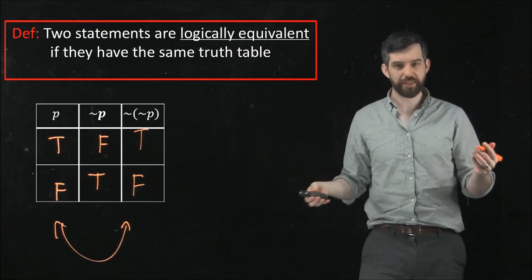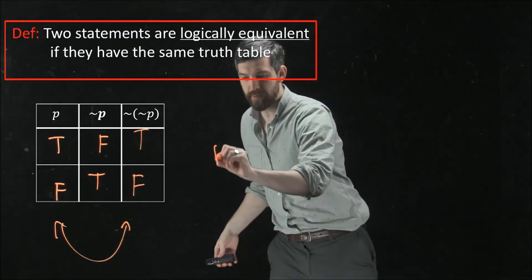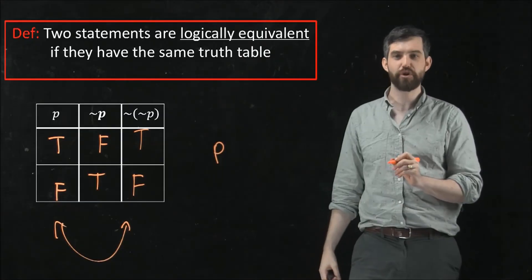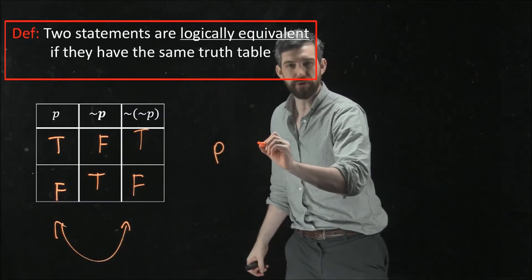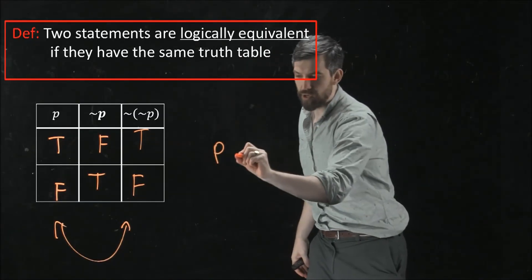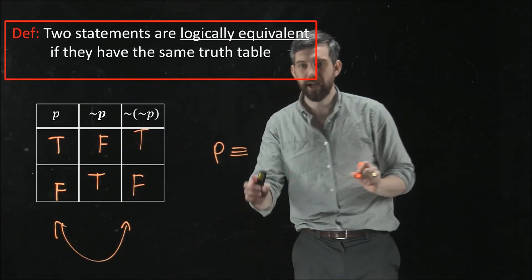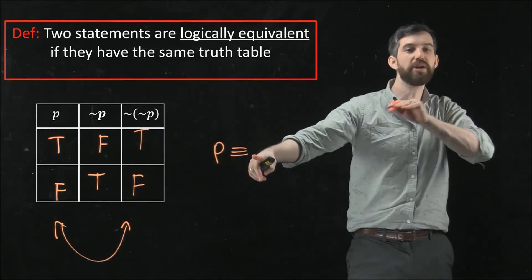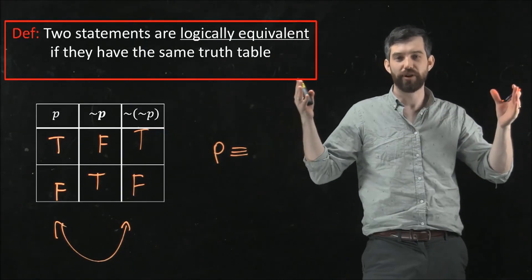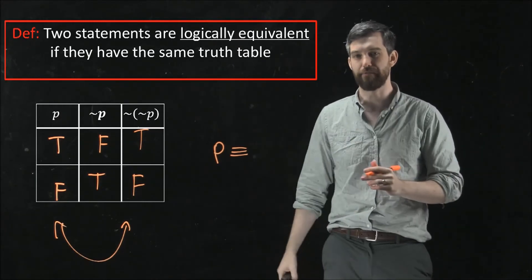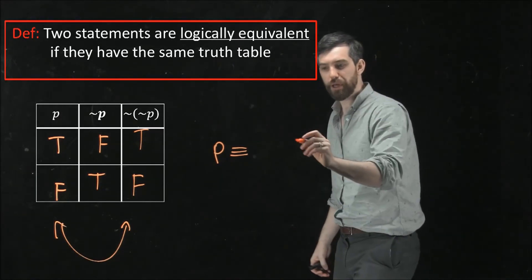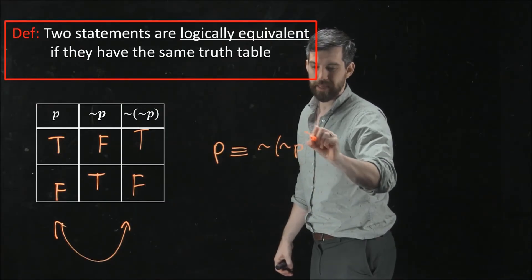And the way that I like to write this, I have my statement p, that's my one, and I'm trying to compare it to something else. And I use, if it's logical equivalence, I use an equality sign, but one that's got like three horizontal lines to it. That's what I mean for logical equivalence. That's going to be my shorthand for it. This is logically equivalent to not not p.